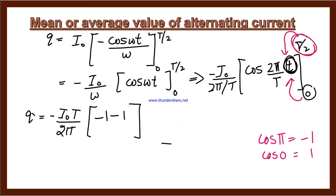So putting these values: cosine π is minus 1 and cosine 0 is 1. So minus 1 minus 1 becomes minus 2. Minus with minus cancel, 2 with 2 cancel. Finally, the answer we get is q equals I naught T divided by π. This is our second equation.